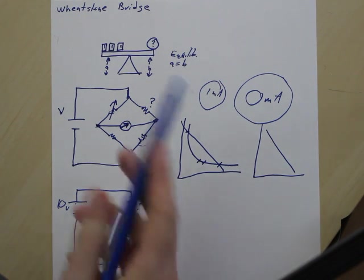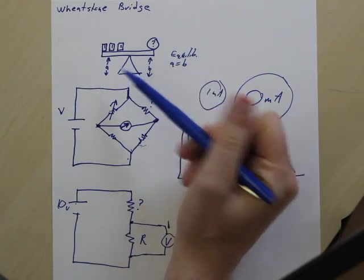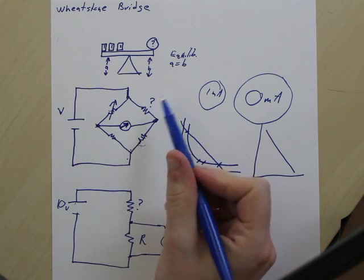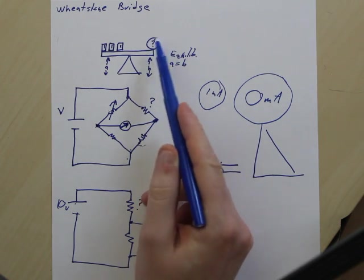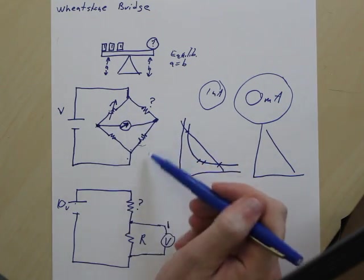However, for now, just remember that what we're trying to do is essentially we're building a scale system and we're trying to be able to determine one of the resistances. We're trying to determine the weight, the analog of weight on this side of the scale. And so we've built this huge scale.